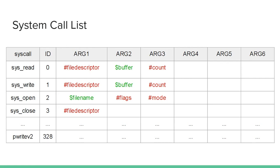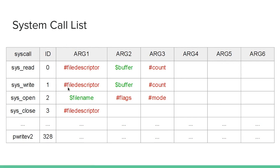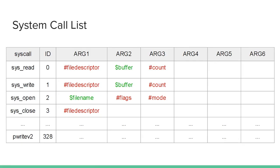Here are some syscalls. We have sysread, syswrite, sysopen, sysclose, and the IDs go from 0 through 328 — that's all the syscalls I could find online. As you can see, there are arguments: argument 1 would be the file descriptor, argument 2 is the buffer, and argument 3 is count. In my color coding, a number sign means it's a number coming directly from a register. A green dollar sign means it's coming from a register, but it's not the actual value — it's the memory address to the data that you put in the register. We'll see that in a little while.